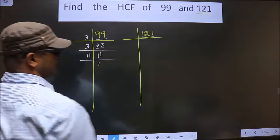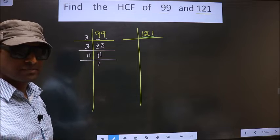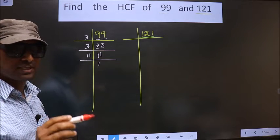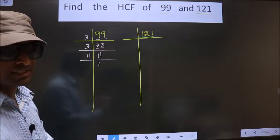Now here we have 121. You should always remember, 11 squared is 121. 11 into 11 is 121. You should remember this.